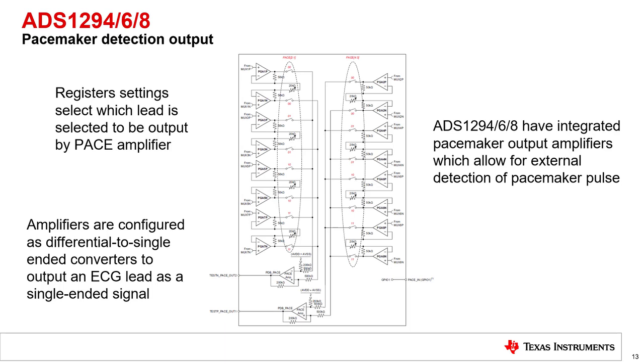The ADS1294, 6, and 8 include a circuit to facilitate pace detection. The device allows the user to choose which ECG channel is selected for pace detection, as you can see from the circled part of the diagram. That channel input is sent to the pace amps, which are differential to single-ended converters. The output is connected to pins on the device. This allows the users to create their own pace detection circuit outside of the ADS129X.